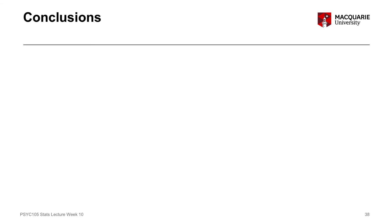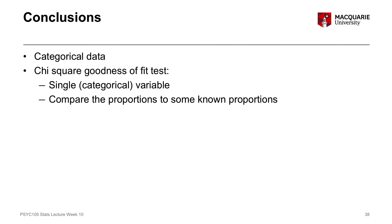In conclusion, today we talked about categorical data and how we think about it in terms of the likelihood of falling into a certain category, or how many people are in each group — a different way of thinking compared to differences in mean scores between groups. We started with the chi-square goodness of fit test, which looks at a single categorical variable and compares the proportion of observations across categories to some external known proportion, such as comparing students' test results to chance.